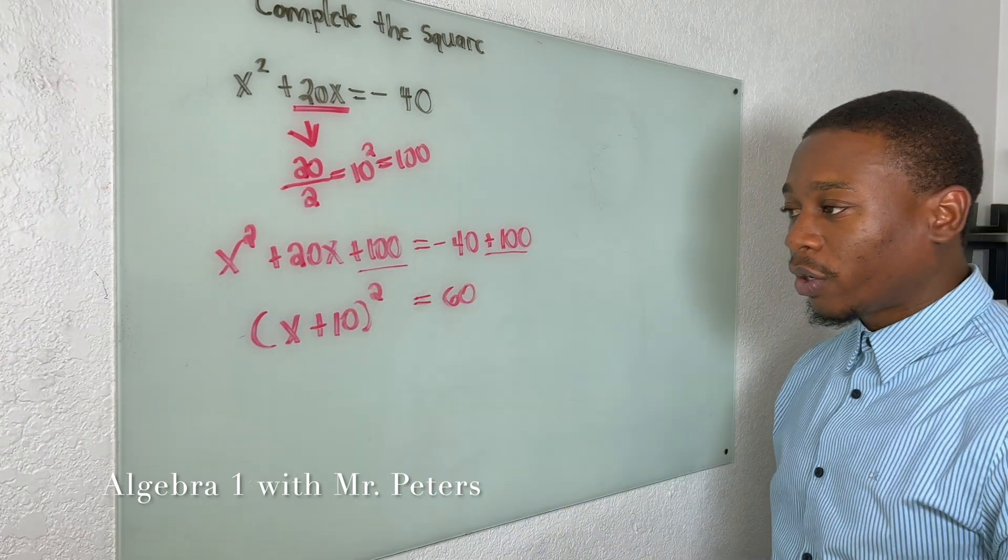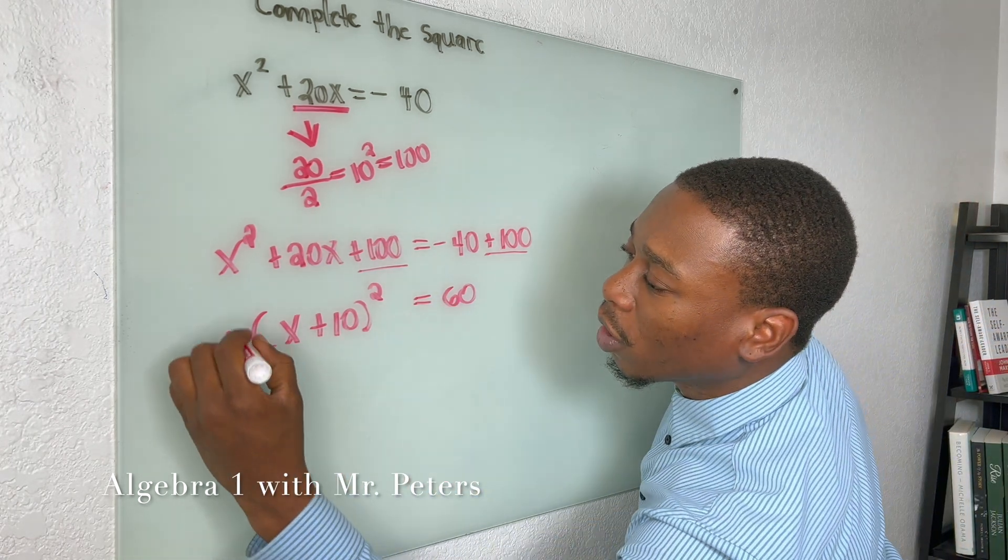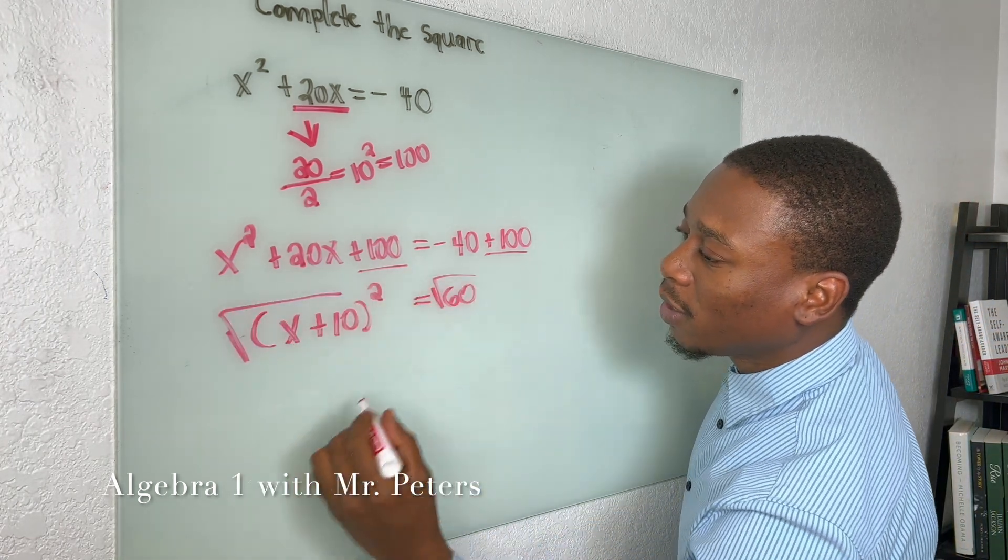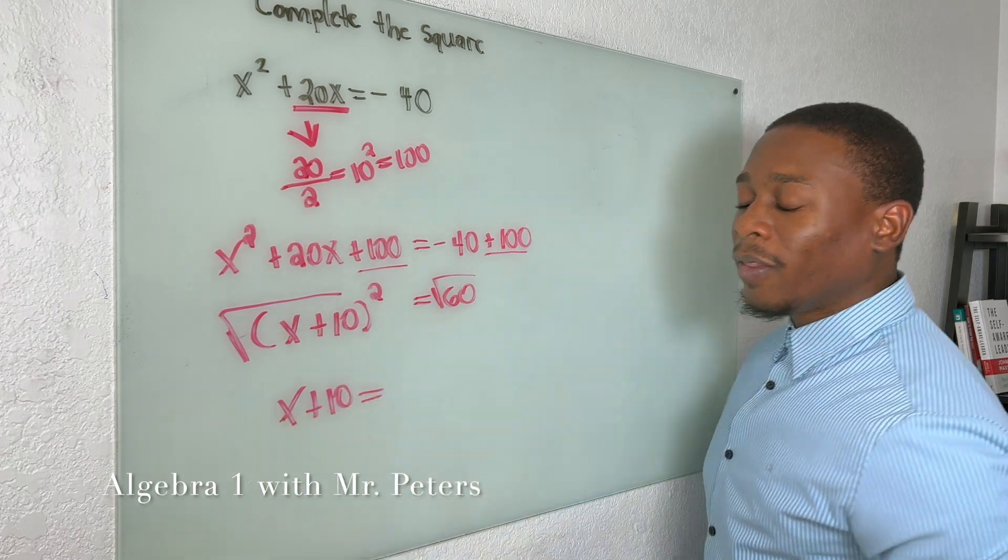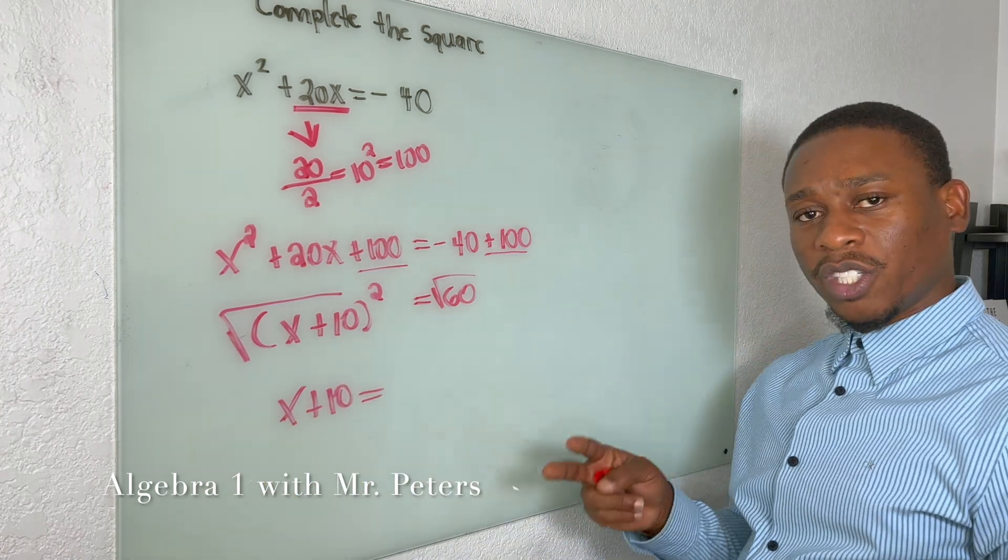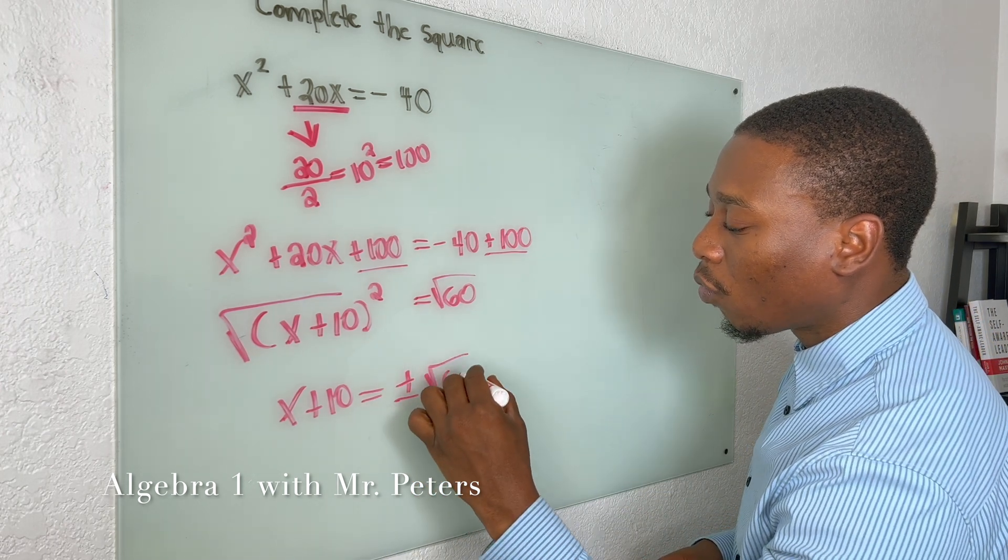This side right here is just positive 60, and now we're trying to figure out what binomial gets me this. And we already know, 10 right? So we're going to simplify this to (x + 10)² = 60. Our next step is we've got to get rid of this exponent. So I'm going to take the square root of both sides.